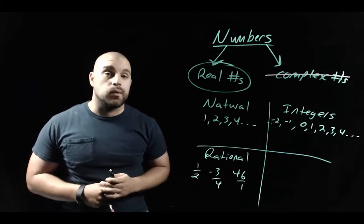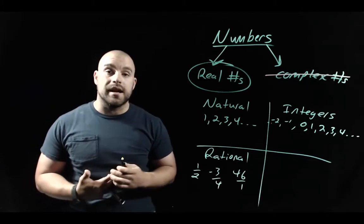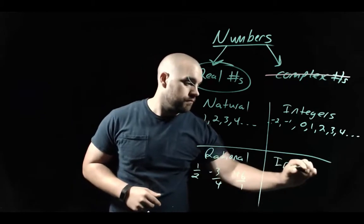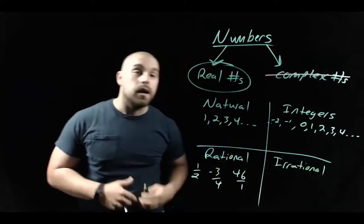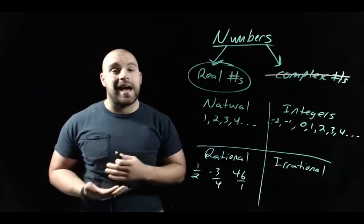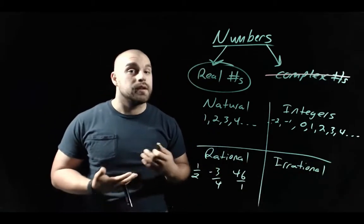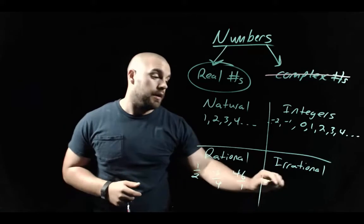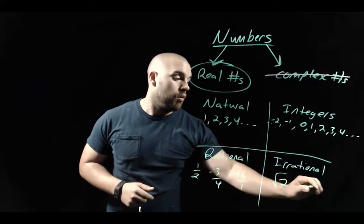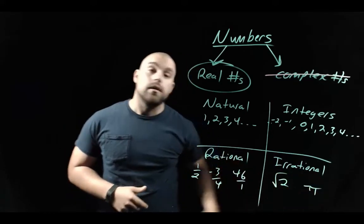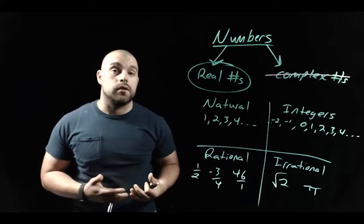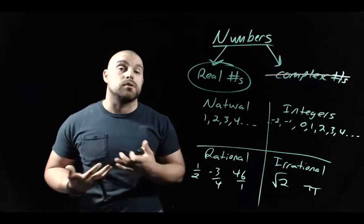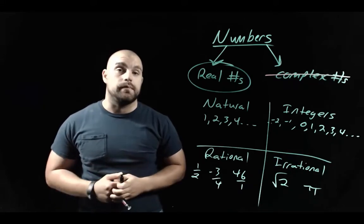The last set are the irrational numbers — numbers that cannot be expressed using fractions. Something like the square root of two or pi are irrational numbers because there's no way to write those numbers as a fraction.